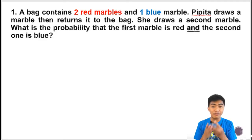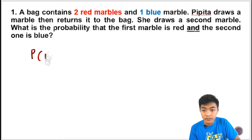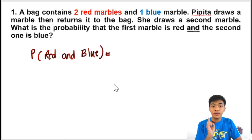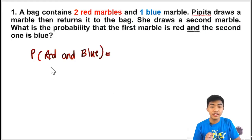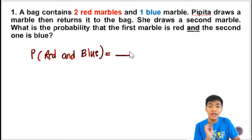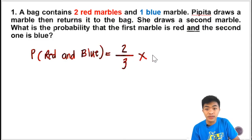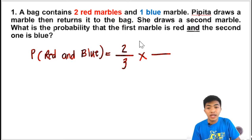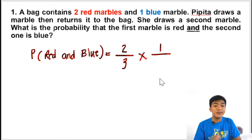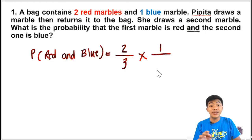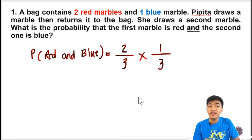For independent events, just get the probability of the first event and then multiply it by the probability of the second event. The probability of getting red: since there are two red marbles in the bag, that is the numerator, and the denominator is the total number of marbles, which is three. So the probability of getting a red marble is two-thirds. We're going to multiply it by the probability of getting a blue marble. Since there is only one blue marble, and she returned the first one she drew, there are still three marbles in the bag. So it's one-third.